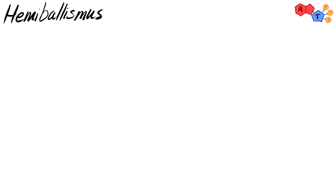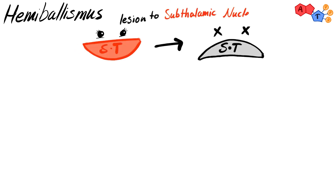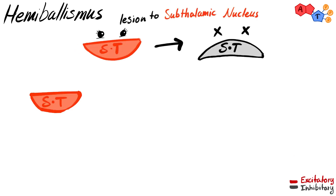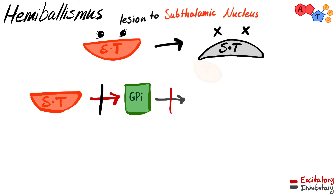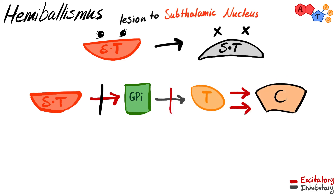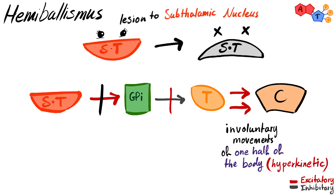Lastly, hemiballismus is another hyperkinetic disorder of the basal ganglia. In this case, there is a lesion in the subthalamic nucleus, so it does not excite globus pallidus interna. This results in less inhibition of the thalamus and consequently involuntary movements of one half of the body.